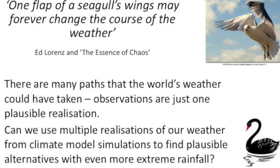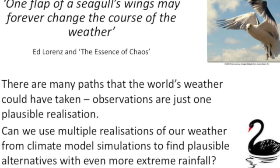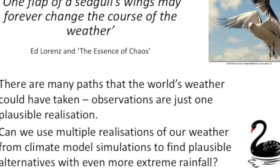Something that we have done to the landscape could have changed the course of the weather the planet has taken. Observations are insufficient to tell us what could plausibly have happened over the last 30 or 40 years. Can we use multiple realisations of weather from our simulations to find plausible alternatives with even more extreme rainfall? We call them black swans.